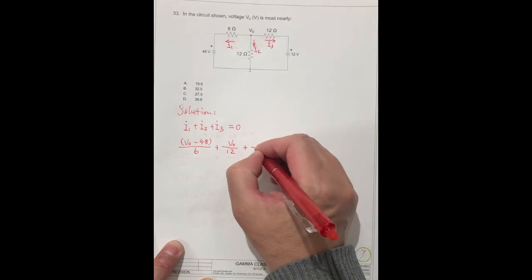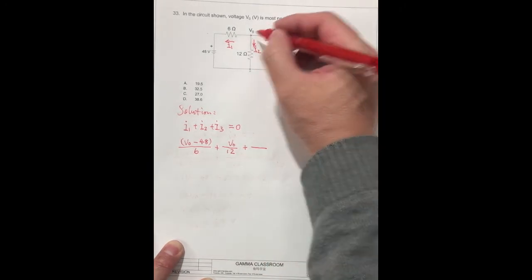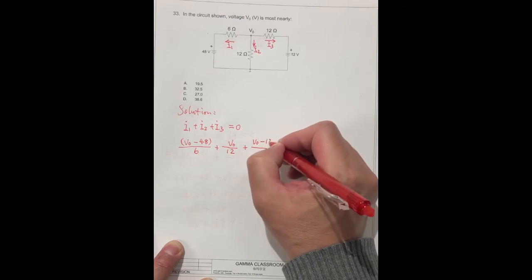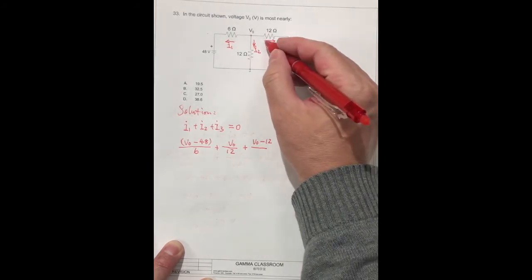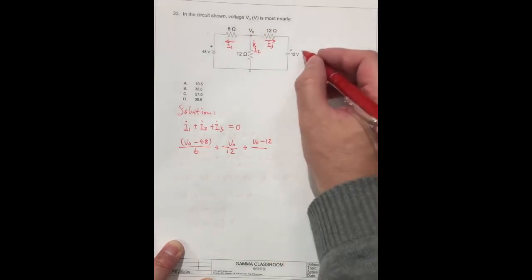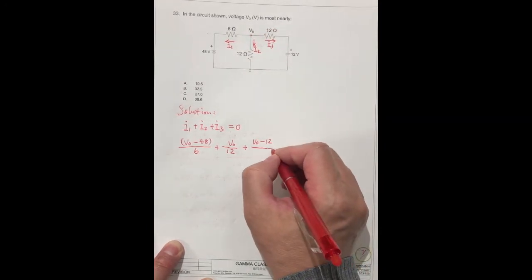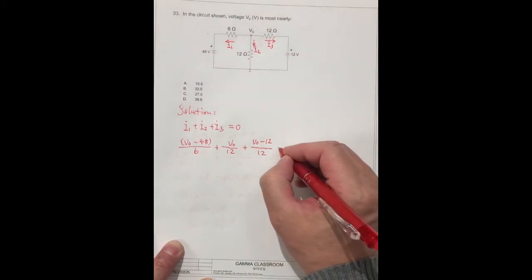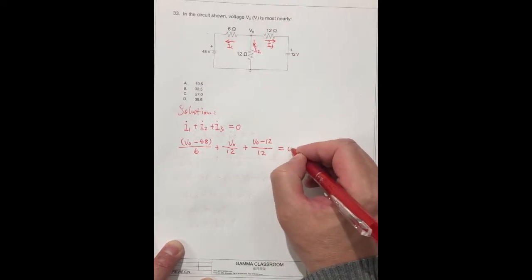And this one I3 is V0 minus 12, divided by resistor 12, equals 0. Pay attention to the direction - we should always use V minus 12 for this resistor.